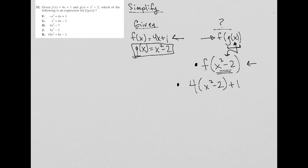Now lastly, I'm just simplifying. I can distribute the 4 across the parentheses, so I'm left with 4x squared minus 8, and then I have a plus 1. Therefore, I can combine those like terms, leaving me with 4x squared minus 7. And therefore, my final answer is choice H.